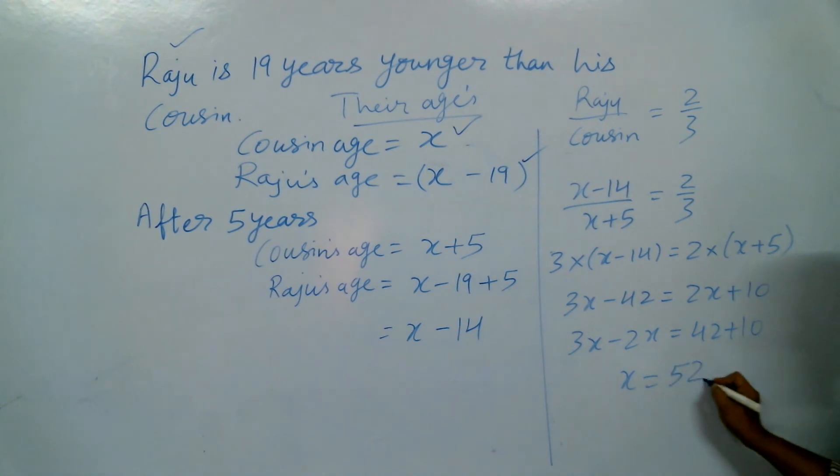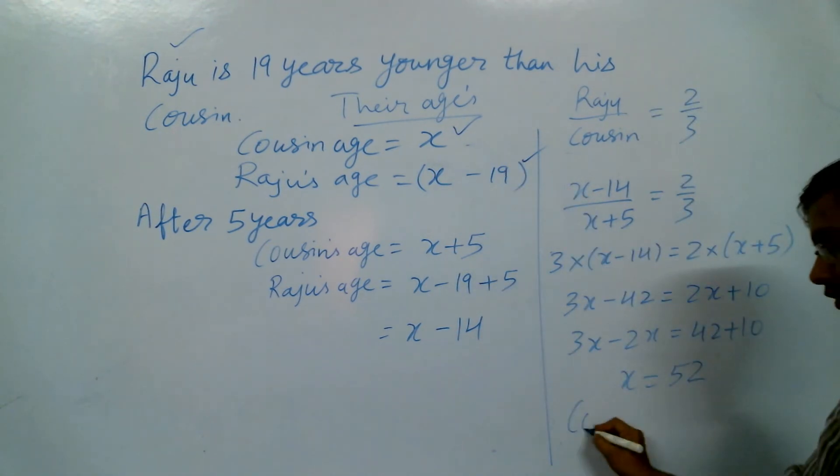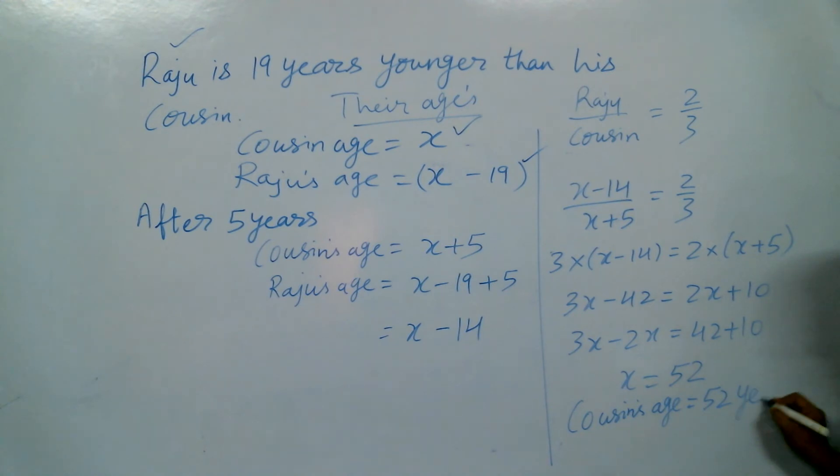x equals 52. This means, x is the cousin's age, so the cousin's age is 52 years, and Raju's age will be 52 minus 19.